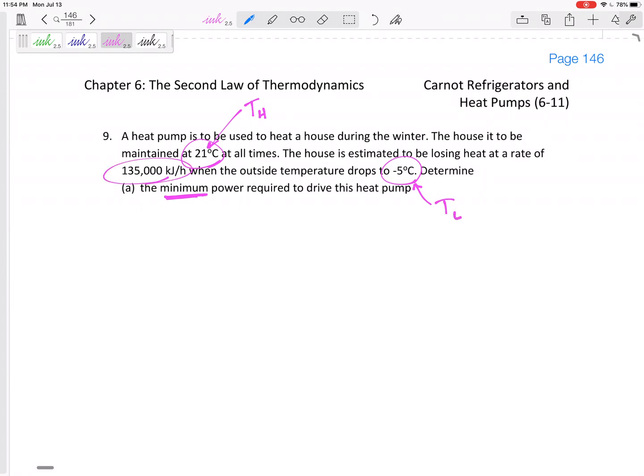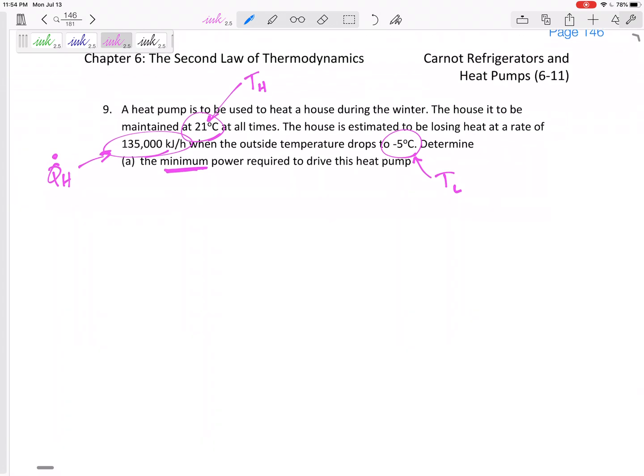So what is it really telling us? The temperature inside the house is the TH. This temperature outside is the TL. This right here, even though it says that's what it is losing, let's think about the heat pump. The heat pump needs to be pumping that in, so that is the QH or the QH dot because it's kilojoules per hour. We don't know the QL, we don't know the power - that's what we're trying to find. So it gives us TL, TH, and QH.